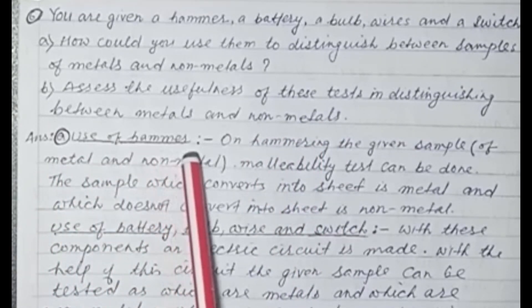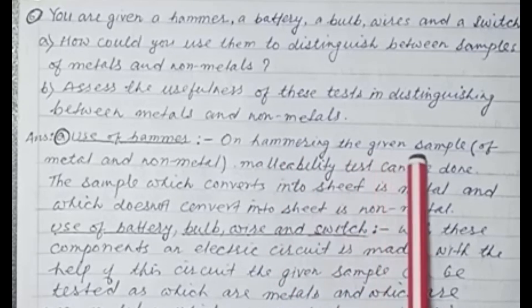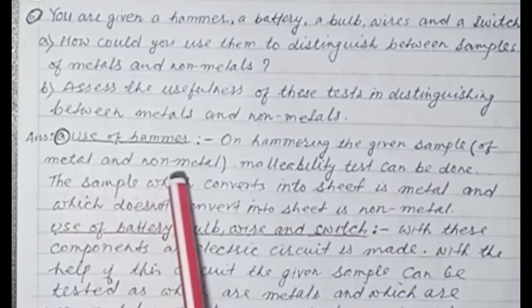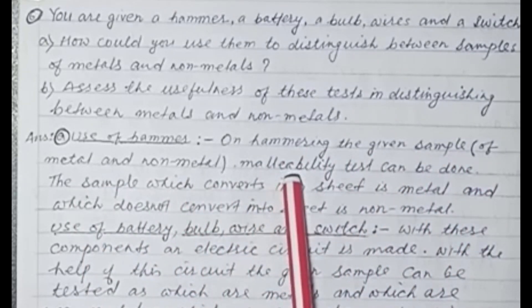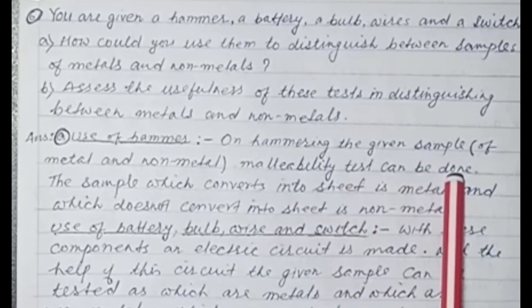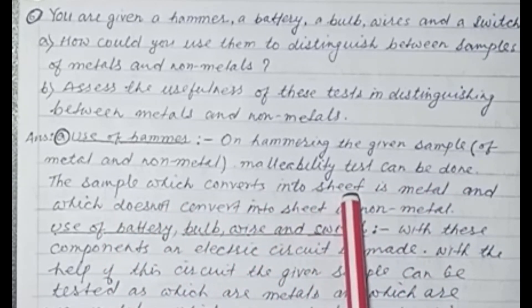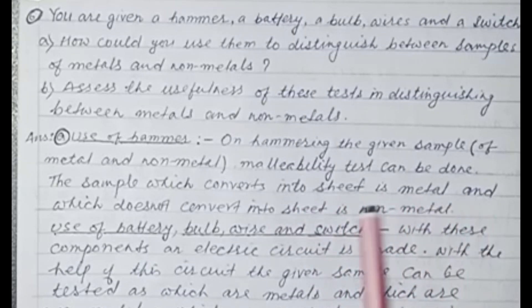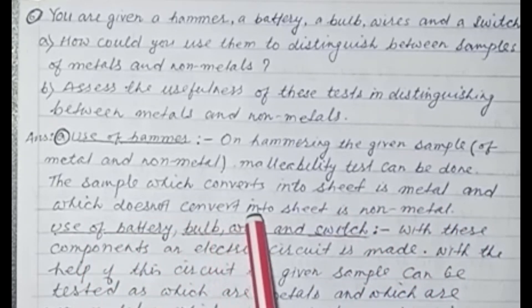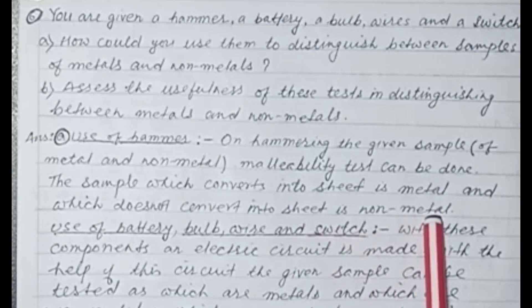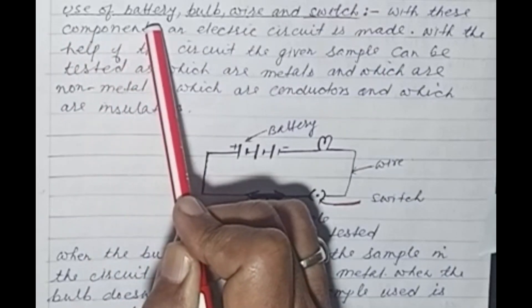Use of hammer: On hammering the given sample of metals and non-metals, malleability test can be done. The sample which converts into sheet is metal and which does not convert into sheet is non-metal.